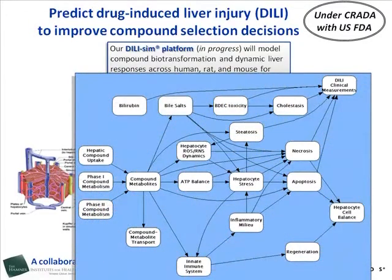The DILI-SIM platform includes the essential processes involved in drug-induced liver injury, including hepatocellular necrosis, apoptosis, and regeneration. Phase I and II drug metabolism leading to reactive metabolites, and the resultant mitochondrial dysfunction with disturbances in free radicals, ATP balance, and steatosis are also represented. Moreover, the interaction between the hepatocytes and the resident immune system and the impact of the inflammatory milieu are likewise incorporated in the DILI-SIM platform.